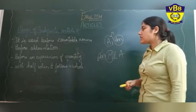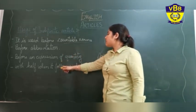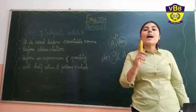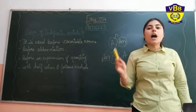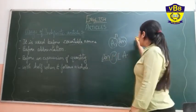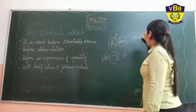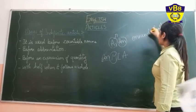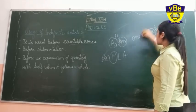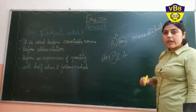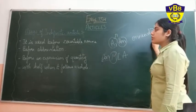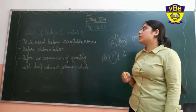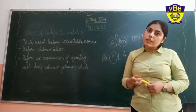And the last point is with 'a half' when it follows a whole — like 'one and a half'. So before 'half' in such expressions, we use 'a'. So these are some uses you should always remember while using your indefinite articles.